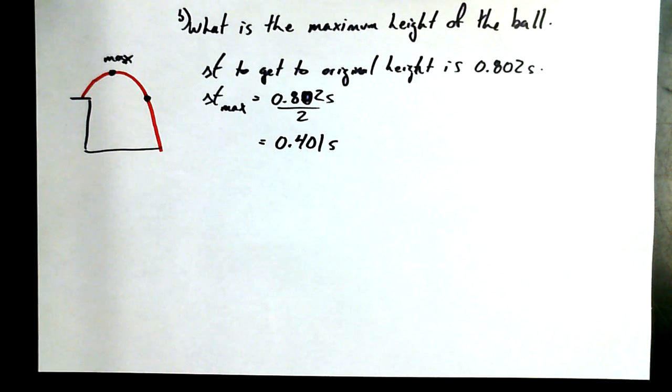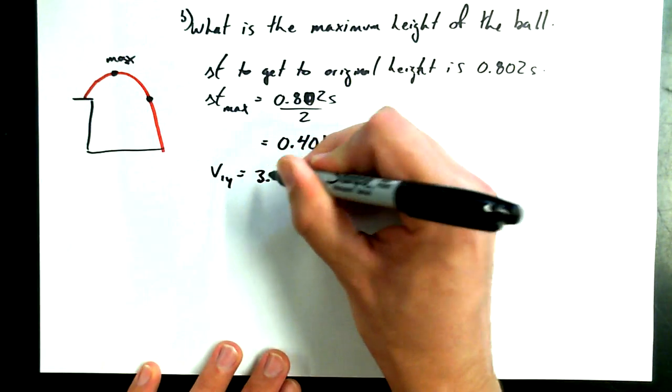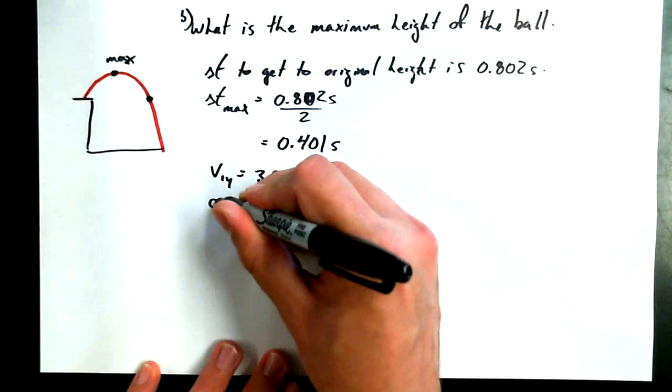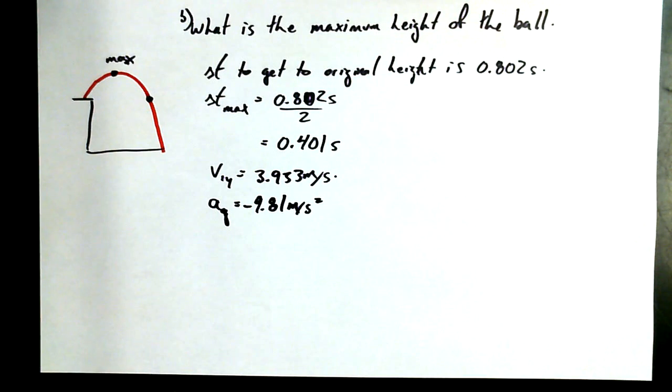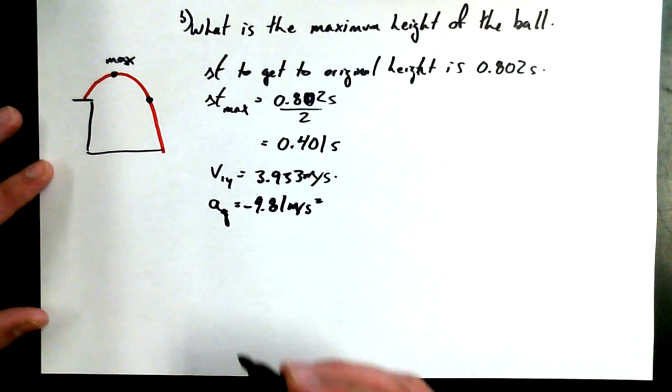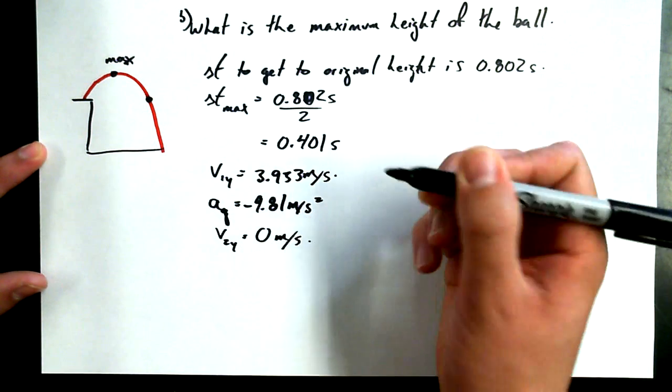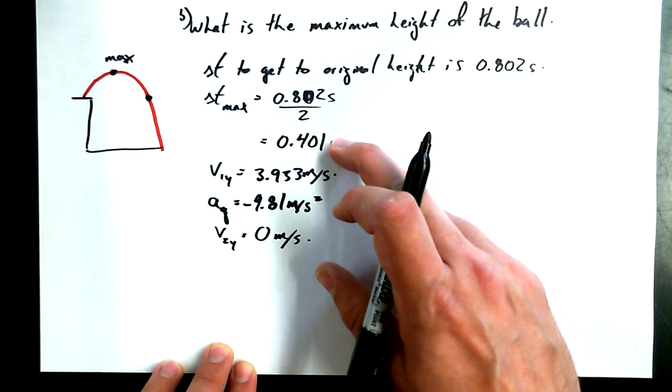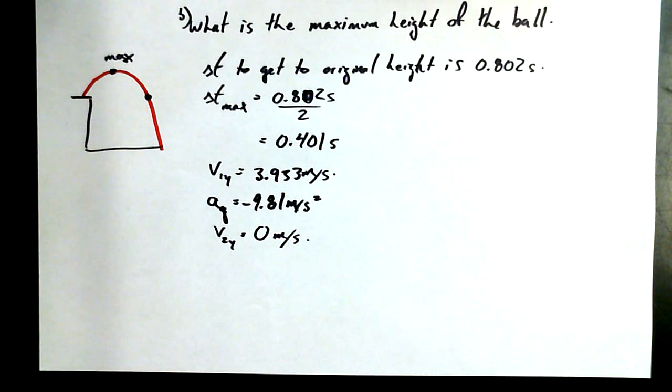So if I want to know what the maximum height of the ball is, I haven't gotten there yet, but I do know when it happens. It's 0.401 seconds after I throw the ball. And if I'm talking about height, I'm being a Y thinker. I'm thinking in Y directions right now. V1Y is 3.933 meters per second. Acceleration Y is 9.81 meters per second squared. We called down negative before, so we'll continue to call it down for part B. We could say that V2Y is equal to zero meters per second when it gets to its maximum. And here we are again. We know four pieces of information.